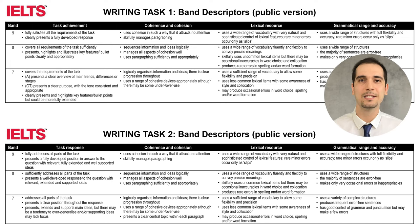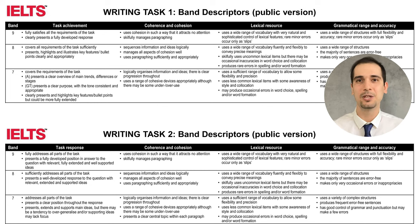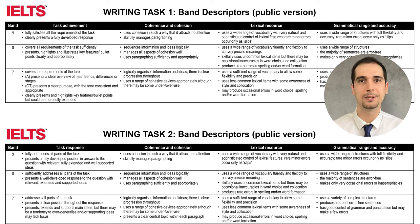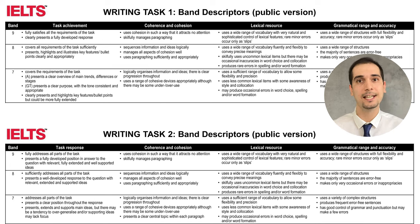First of all, let's have a comparison between the band descriptor for task one and task two. For task one the criteria are: task achievement, coherence and cohesion, lexical resource, and grammatical range and accuracy. Comparing the two descriptors, the first column is the one that differs — task one has task achievement while task two has task response. This video is dedicated to task one, so let's shift focus on that.